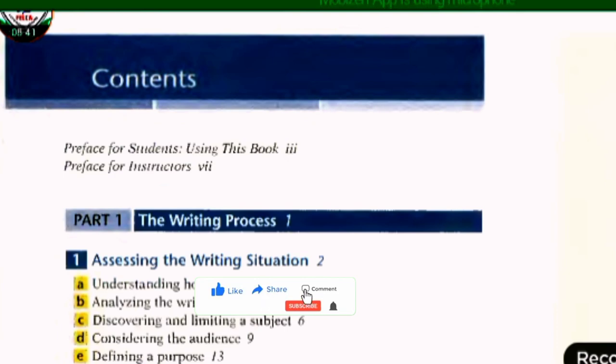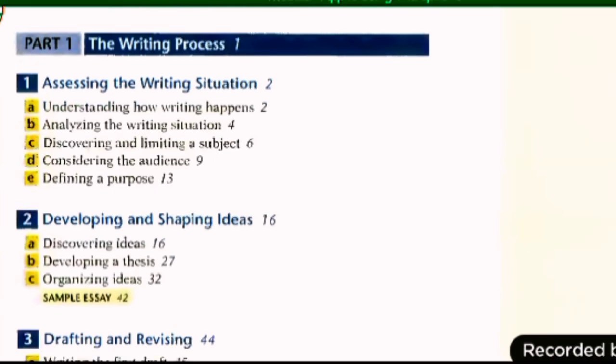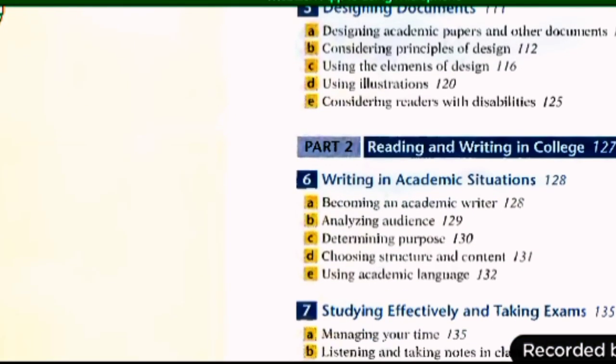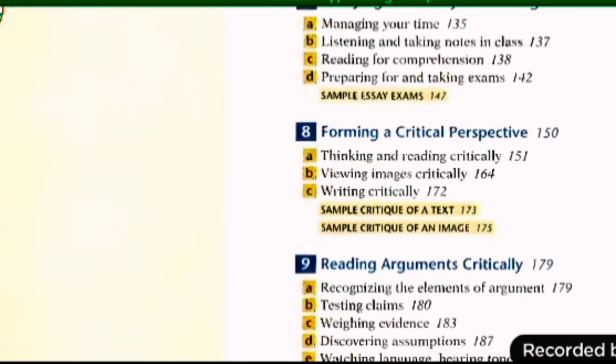The book is divided into parts with sub-topics. The first part covers the writing process - we will learn how to write, how to write clearly. The second part is reading and writing in college, covering how to read and write in academic situations and all the important points.